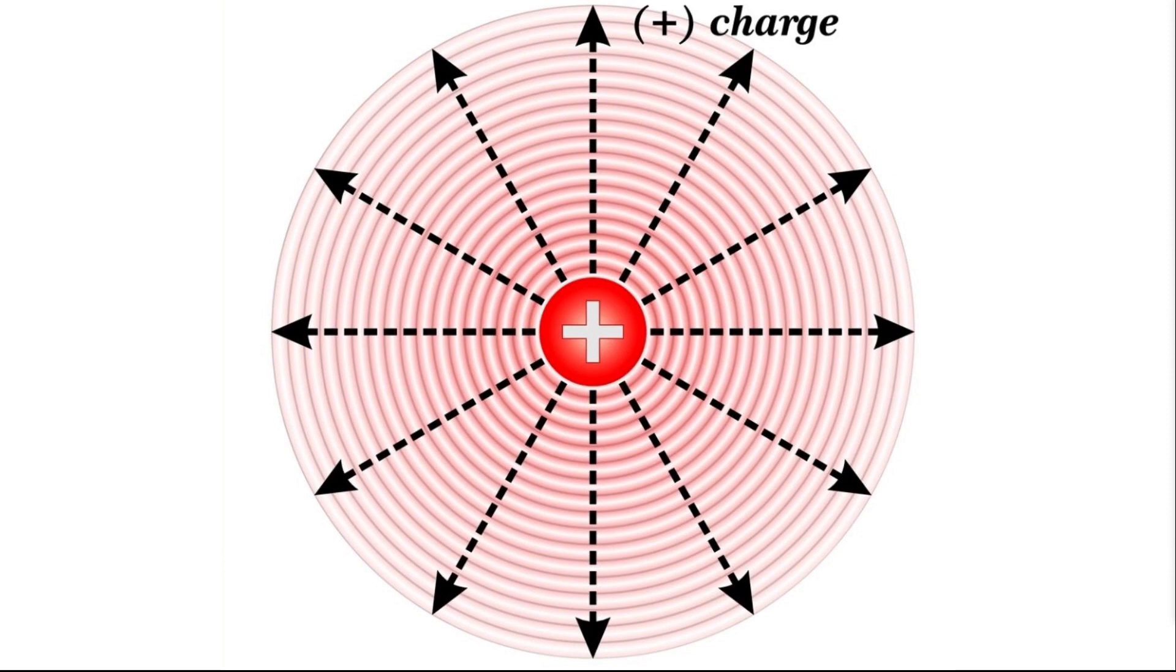Same here with this positively charged particle. The arrows now suddenly all point away from it. Why? Well, it's because if I put a positively charged particle anywhere near this one, it's going to run away from it. So the arrows are describing the direction a positive charge would go.